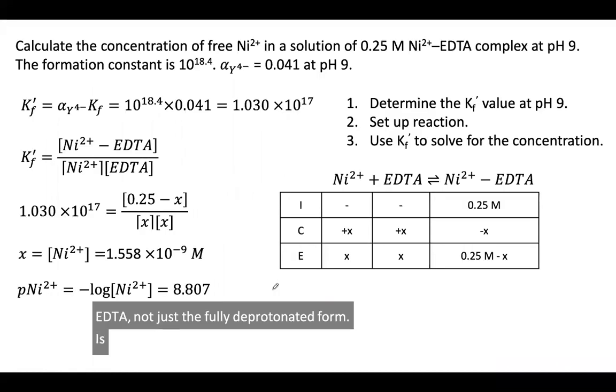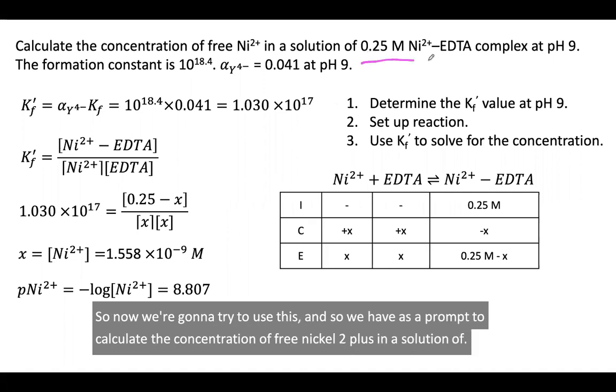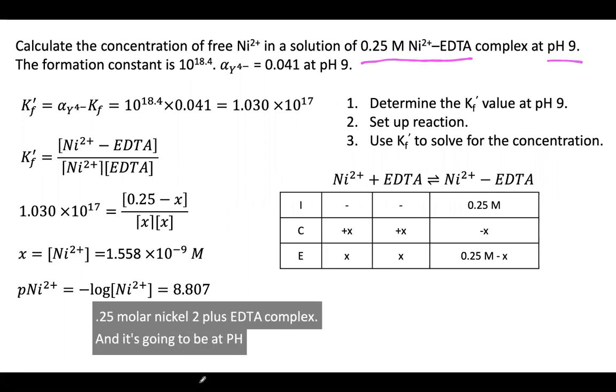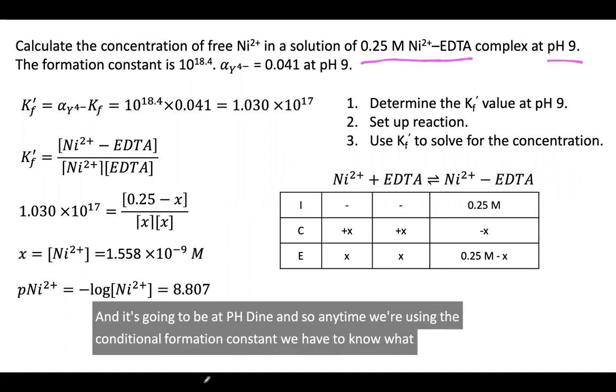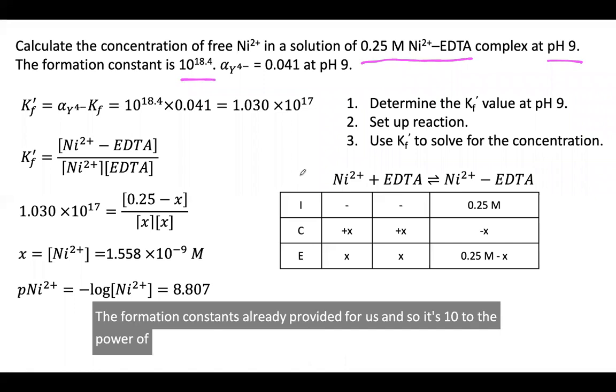Now we're going to try to use this. We have a prompt to calculate the concentration of free Ni2+ in a solution of 0.25 molar Ni2+-EDTA complex at pH 9. Anytime we're using the conditional formation constant, we have to know what that pH is. The formation constant is already provided for us, 10 to the power of 18.4, and our fractional composition is 0.041 at pH 9.